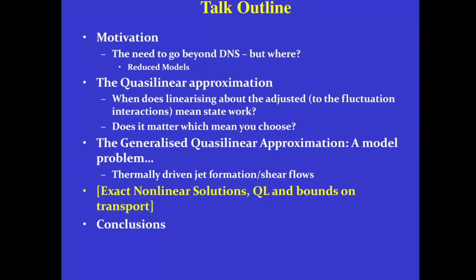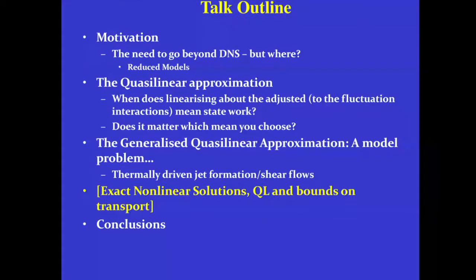This talk is going to be a little bit different from some of the others — I'm not perhaps going to talk too much about wall-bounded shear flows. By training I do geophysical and astrophysical fluid dynamics, and in geophysical and astrophysical fluid dynamics we can't do DNS. The Reynolds numbers are something like 10 to the 10, 10 to the 12. So we need reduced models, and most of this talk will be about something called the quasi-linear approximation and how we've been thinking about generalizing it to come up with statistical closures for large-scale dynamical calculations.